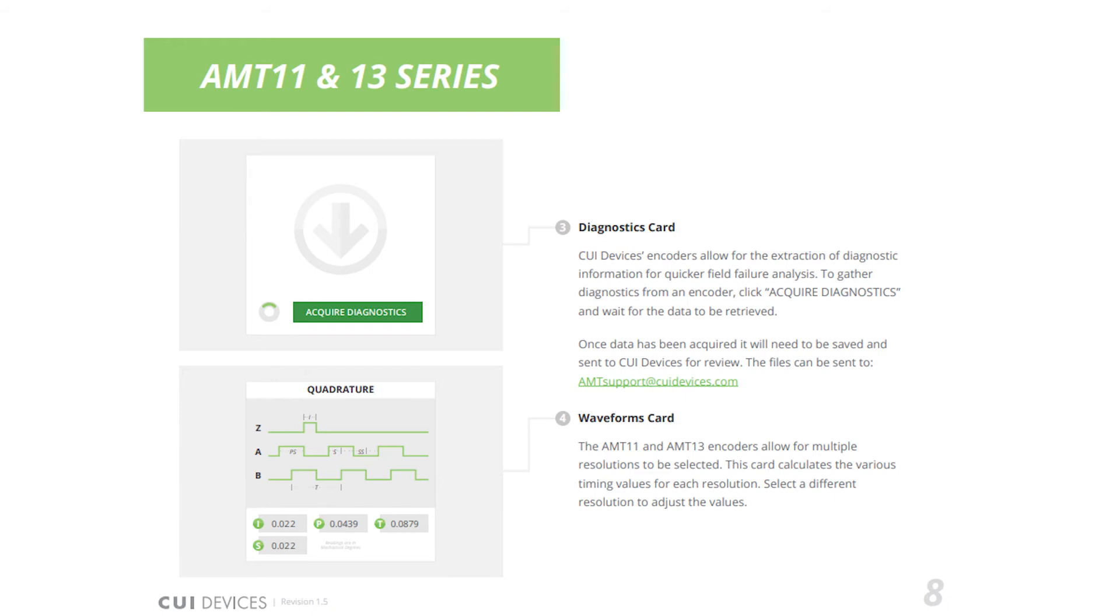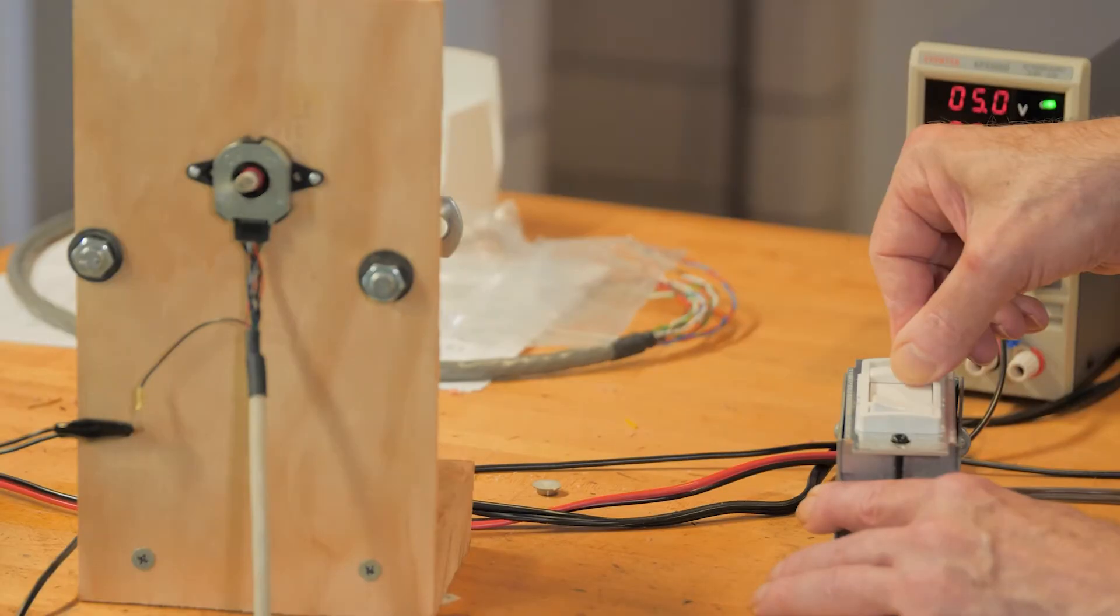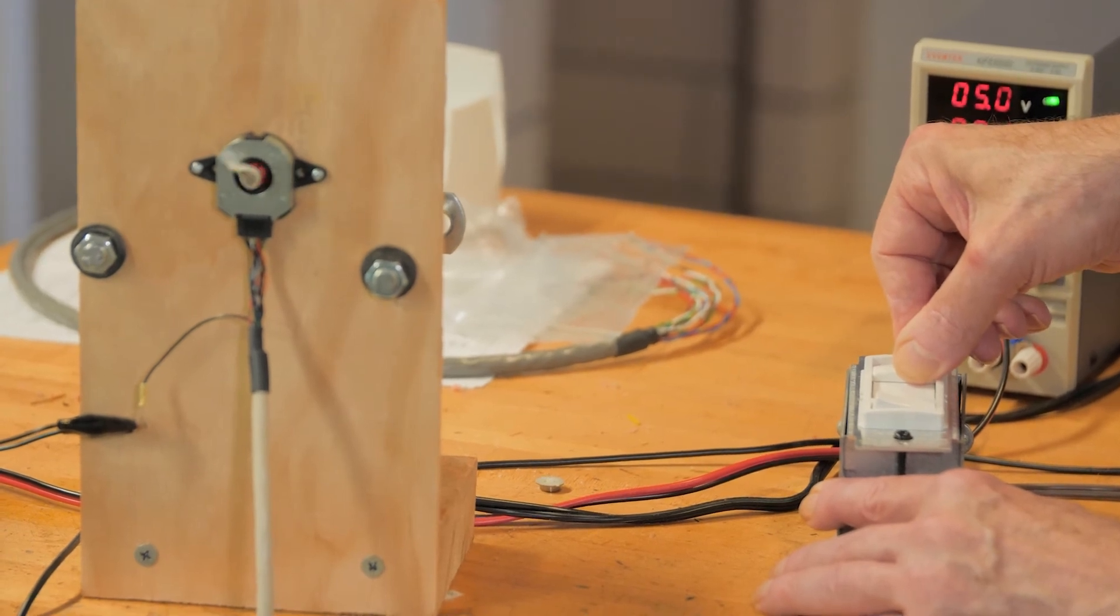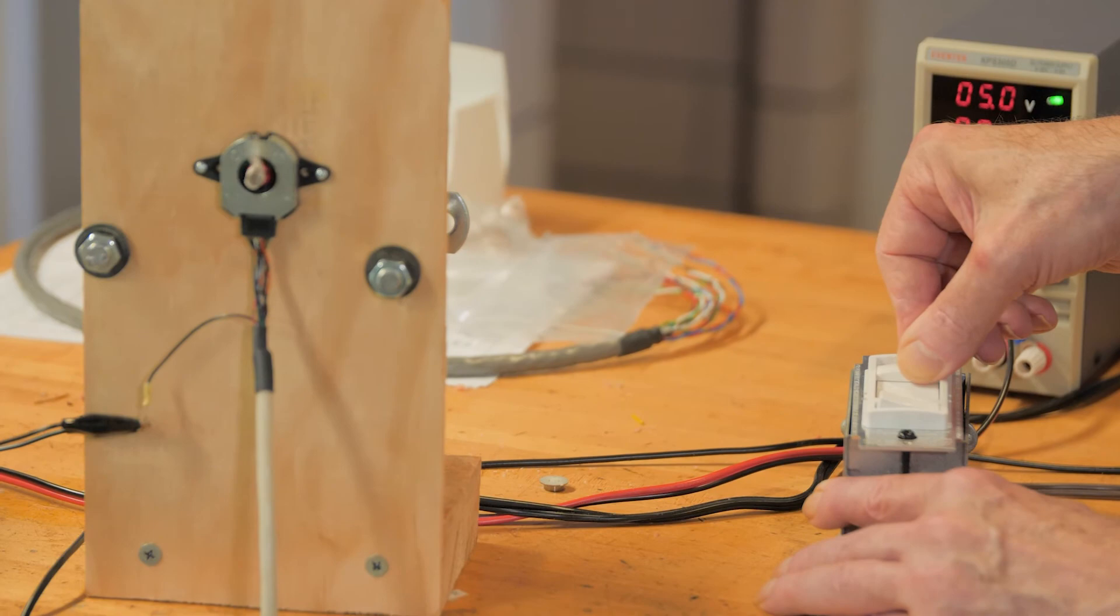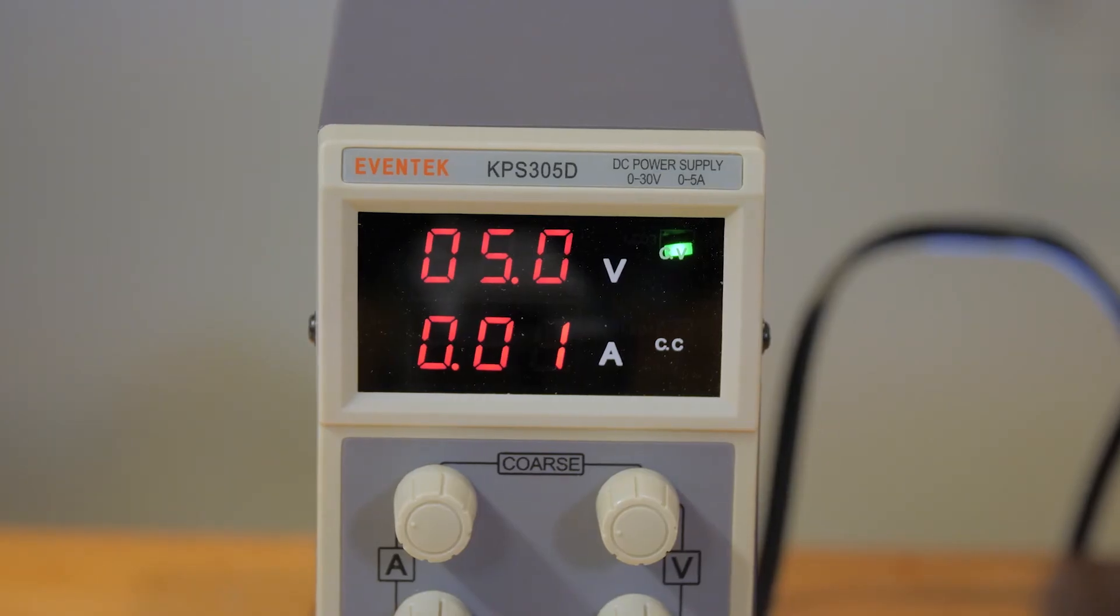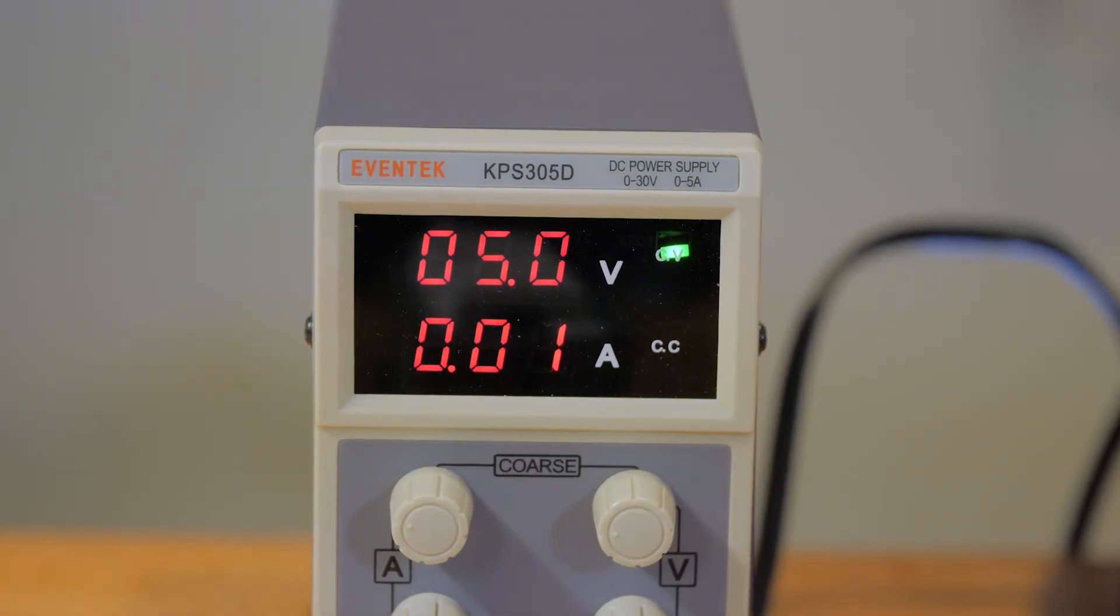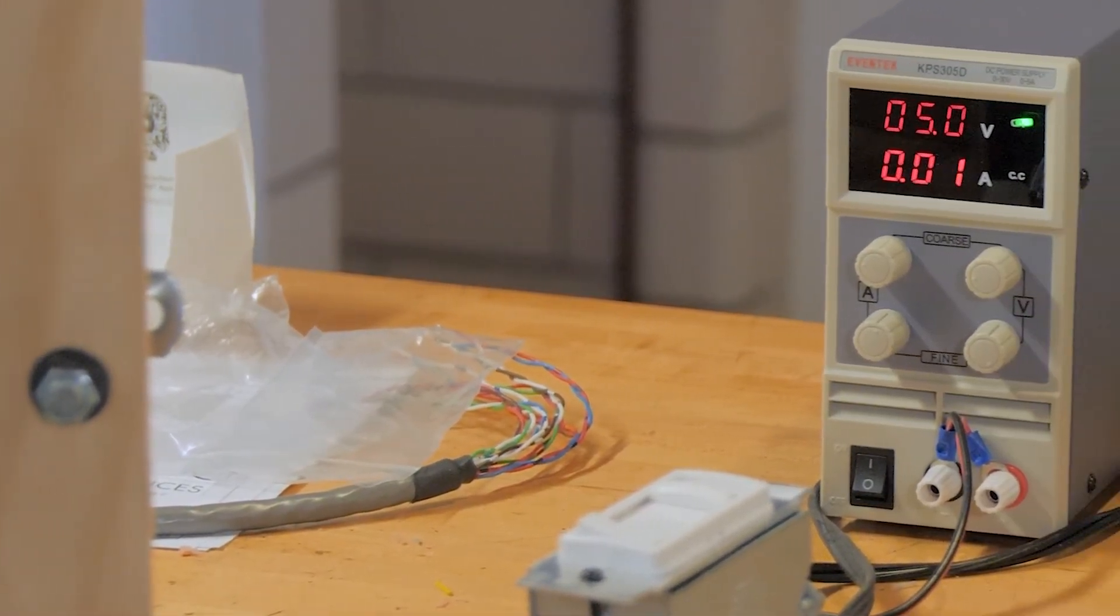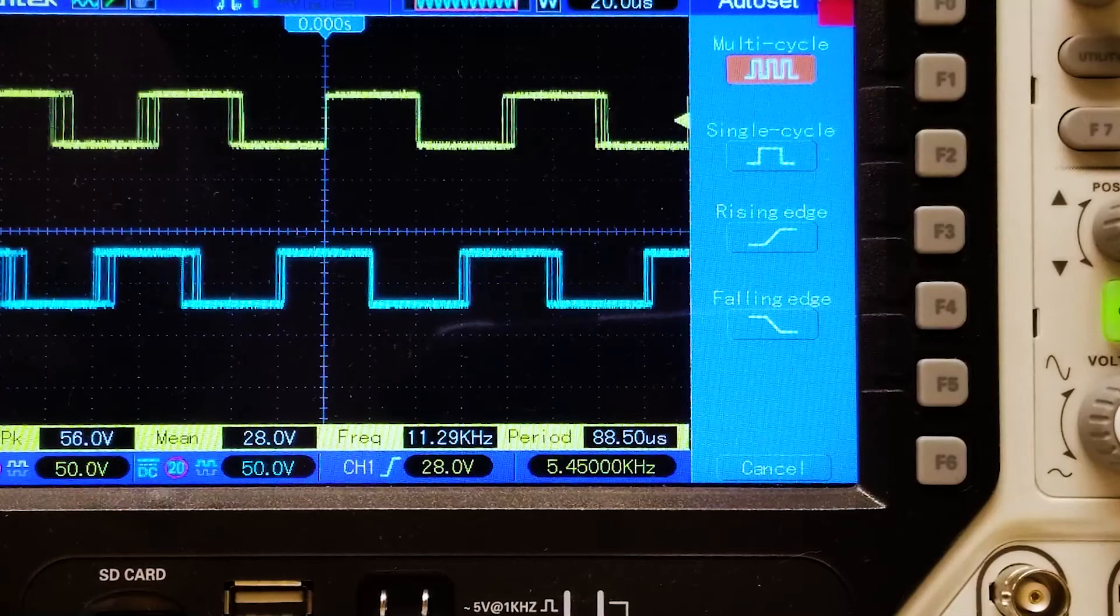The connector gives you access to the usual A and B quadrature channels and to their inverses, plus a once-per-shaft-revolution index pulse. The encoders work from a 5-volt power supply as is typical for CMOS. You can see the A and B quadrature signals on our scope display.